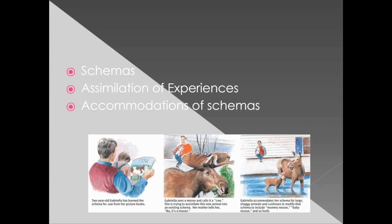As children grow up, they develop schemas — conceptual ideas. Generally schemas start off very broad. For example, my daughter when she first grew up looked into the neighbor's yard, saw a dog, and said 'dog.' Then she saw a cat and said 'dog,' and then a cow and said 'dog,' because she had a schema that all four-legged animals were dogs. Over time, she assimilated her experiences — she remembered and used them to reclassify her understanding. This caused her schemas to be accommodated, becoming more specific, and she was able to discern the difference between a dog, a cat, and a cow.